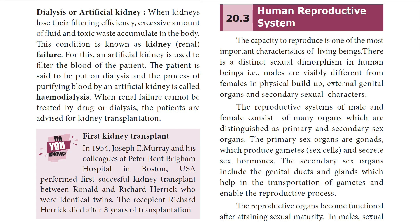When the kidney loses its efficiency in filtering toxic substances from the blood, this condition is called kidney failure or renal failure. The toxic waste accumulates in the body, and an artificial kidney is used to filter the patient's blood — the patient is said to be put on dialysis. The process of purifying blood by an artificial kidney is called hemodialysis. When drugs or dialysis cannot treat the condition, kidney transplantation is advised. The first successful kidney transplantation was performed at USC by Joseph E. Murray and his colleagues in 1954, between identical twins Ronald and Richard Herrick.